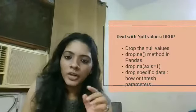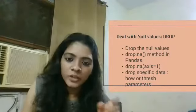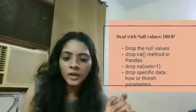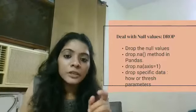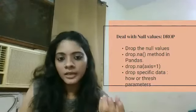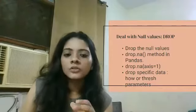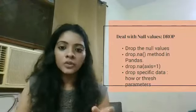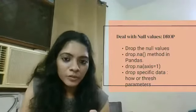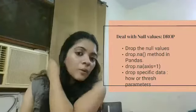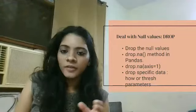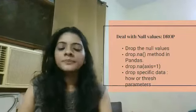The dropna() method is used for dropping these values and will drop all the null values in your rows by default. When you use dropna() with axis=1, this will drop all the null values in your columns. If you want specific values to be dropped, you can use the 'how' or 'thresh' parameters. With how='all', all null values will be dropped. The thresh parameter sets a threshold — all rows or columns not meeting that threshold will be dropped.